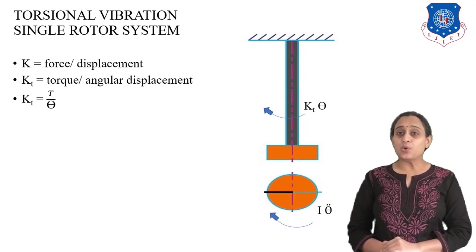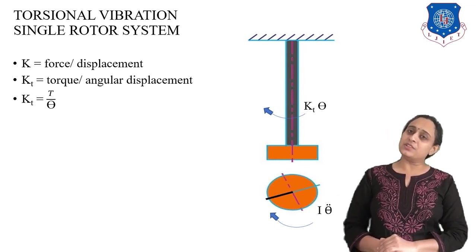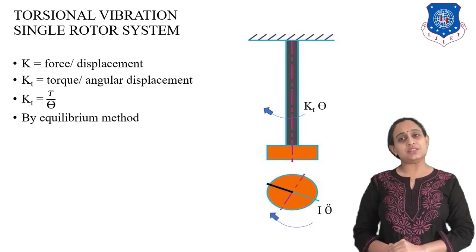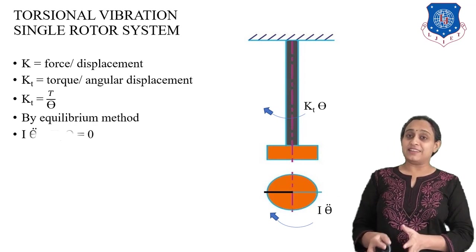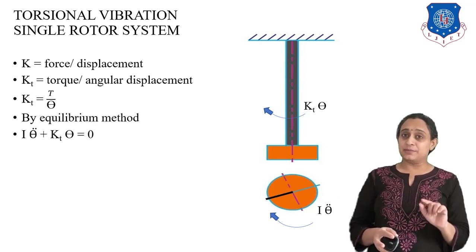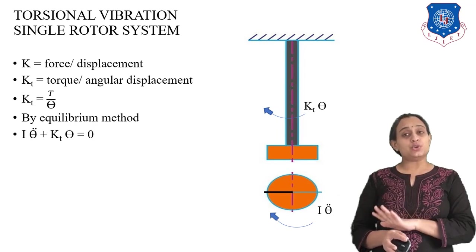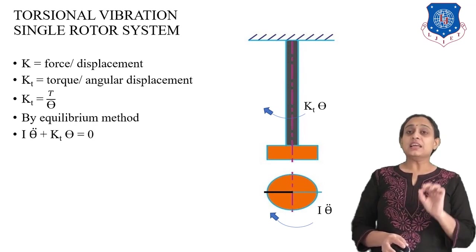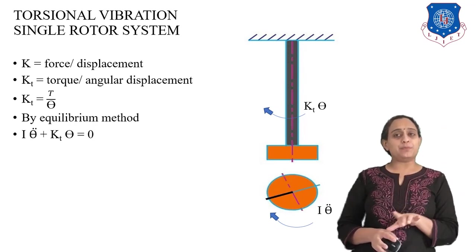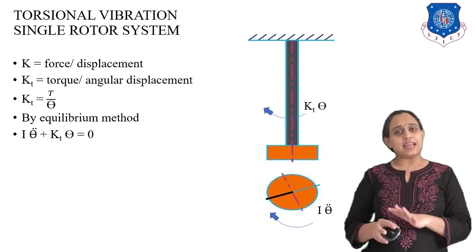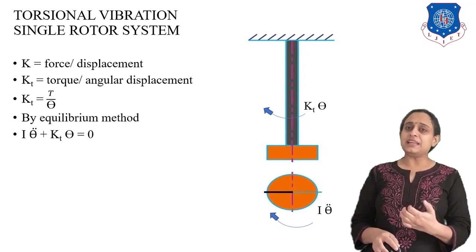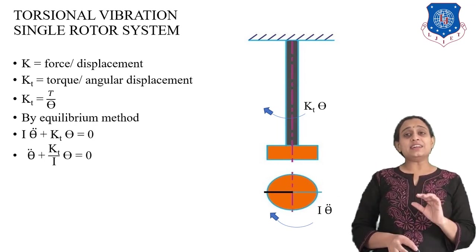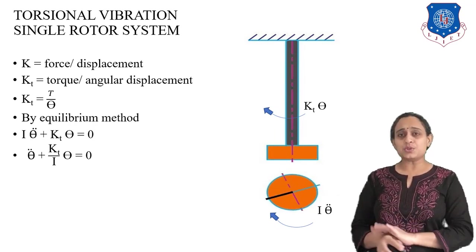We need to calculate all the moments acting on the system and consider the equilibrium condition. For the equilibrium condition, we write I·θ̈ + KT·θ = 0. Here I₀ means moment of inertia at a particular point, but since we are not considering a particular point, we simply write I·θ̈. Dividing by I gives θ̈ + (KT/I)·θ = 0.